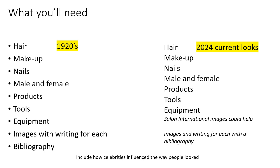Looking at the brief given this year and also at previous GCSEs on the City and Guilds website, you can see it's quite similar. You've got hair, makeup and nails for both male and female, products, tools and equipment, images and bibliography for the 1920s — and exactly the same for 2024. If you attended Salon International, you can use images you took there on your own personal camera as extra research. Also think about celebrities and the way they influenced everyone else to dress and look the same in that particular era.